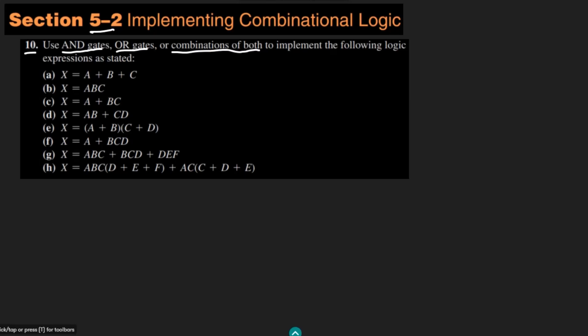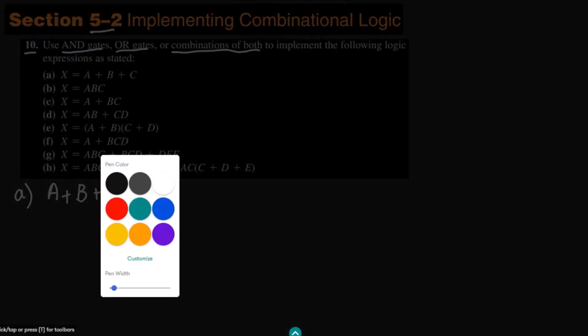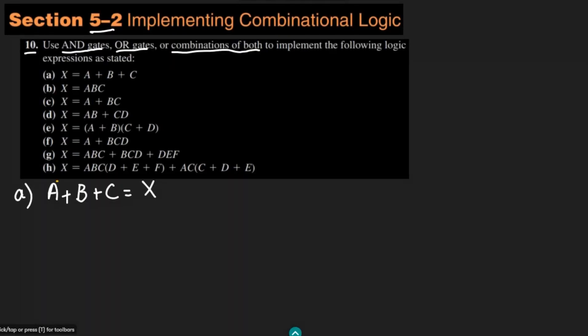Part A: the expression is a + b + c = x. The first step is to see what inputs we have. Here we have three inputs: a, b, and c. The operation here is '+', which means OR. We are implementing this circuitry where the number of inputs to the gate can be variable, not restricting ourselves to two-input gates.